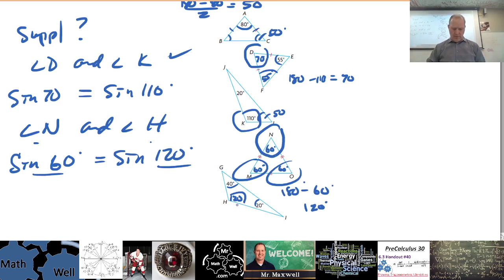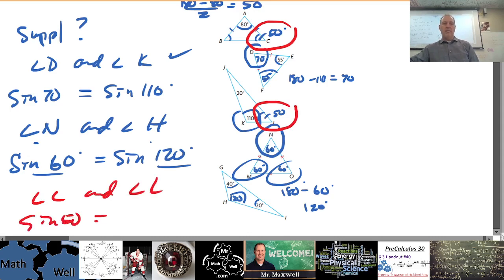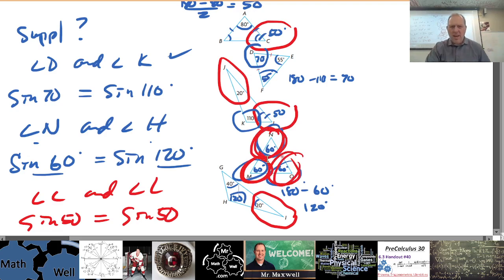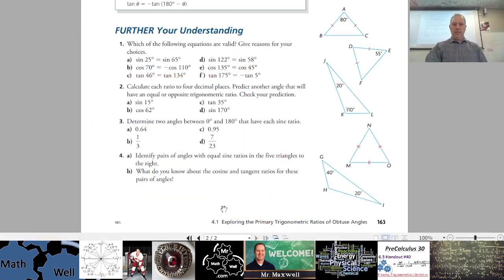Equal angles also have the same sine ratio — not just supplementary pairs. Angle C and angle L are both 50°, so sine of 50° equals sine of 50°. Angles I and J are the same. Angles N, M, and O are all 60°, so any pairing among them works. Angles F and E, angles B and C — you can name as many equal-angle pairs as you can find. Equal angles and supplementary angles all share the same sine ratio.